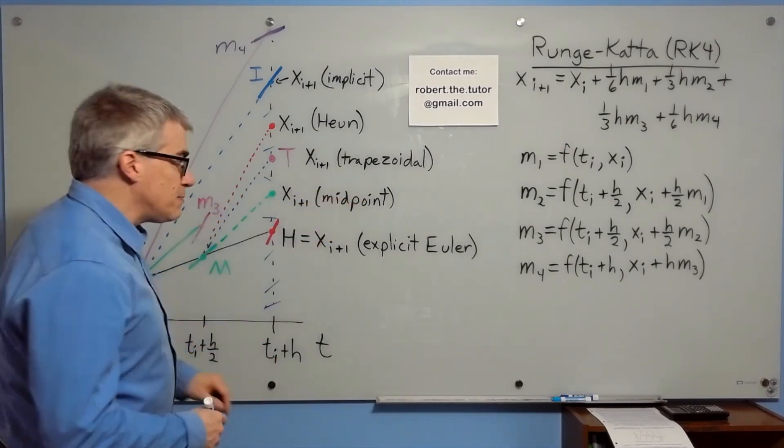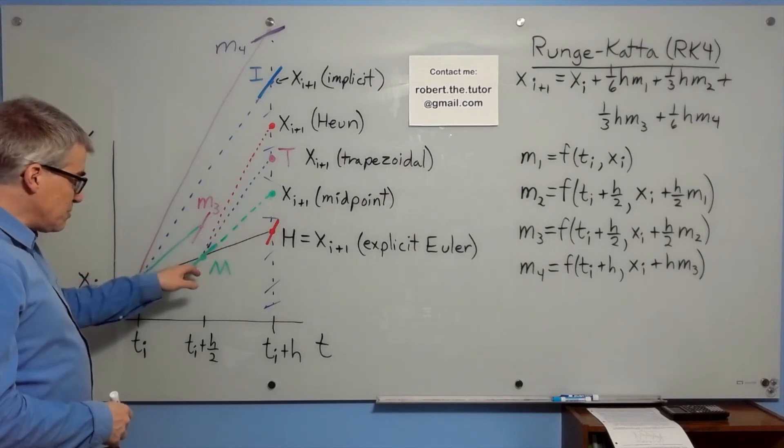The second slope, m2, is the slope when you go halfway explicit. So it's the slope at m.